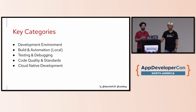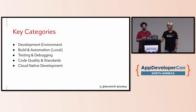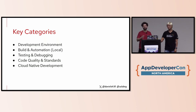We have different categories: development environments — local and remote, and how to configure them. Build and automation — packaging your application and turning it into a container for Kubernetes. Testing and debugging — not discussed much at these conferences, but critical for how developers verify their containers are doing what they should. Code quality and standards — linters, formatters — things much closer to developers than infrastructure. And finally, cloud native development tools like SDKs, such as OpenTelemetry, which provides polyglot implementations across programming languages.